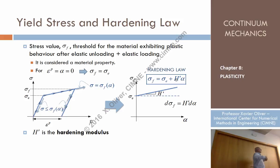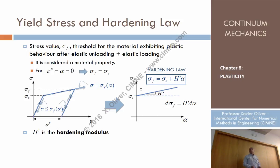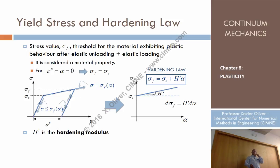Alpha and H prime characterize the capacity of the material to increase strength when plastic strain is produced. This hardening law can be generalized: if instead of a straight line we want a curved line in the yield stress versus alpha diagram, we modify the hardening law accordingly to change the shape of the elastoplastic branch.